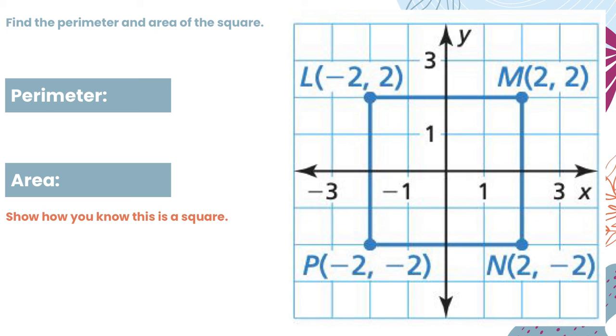For this problem, I want to find the perimeter and area of the square. Since everything is vertical or horizontal, I do not need to use the distance formula. I can say that my lengths are 4. The perimeter formula tells me 4 times the side, so 4 times 4, which gives perimeter of 16. For area, I do the side squared, which means 4 squared, which is also 16.